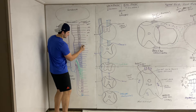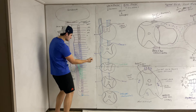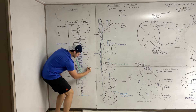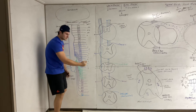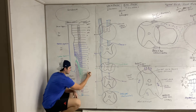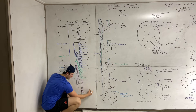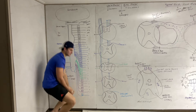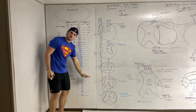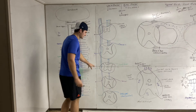Proceeding down: T1, T2, and all thoracic nerves run below their vertebrae — T1 through T12. Same for lumbar: L1 through L5. Sacral: S1 through S5. And coccygeal: one nerve. Every single vertebra, except cervical, has its nerve running below it.